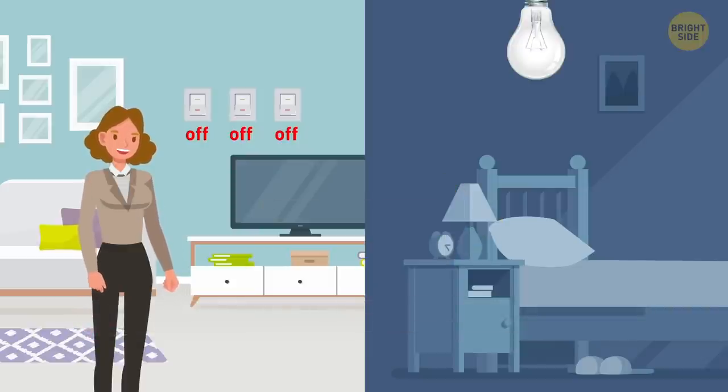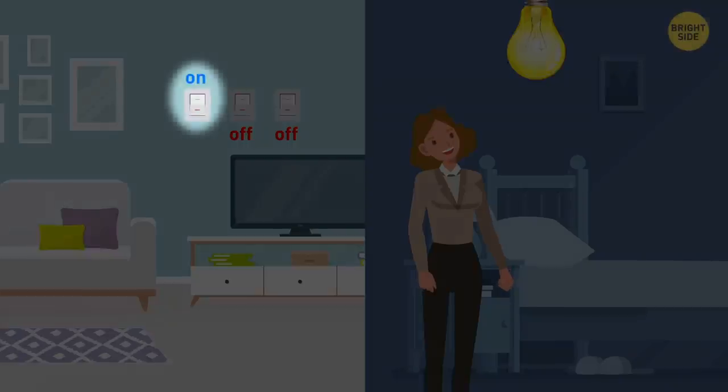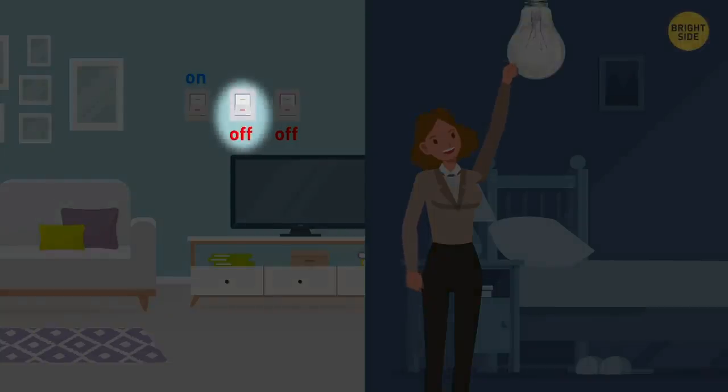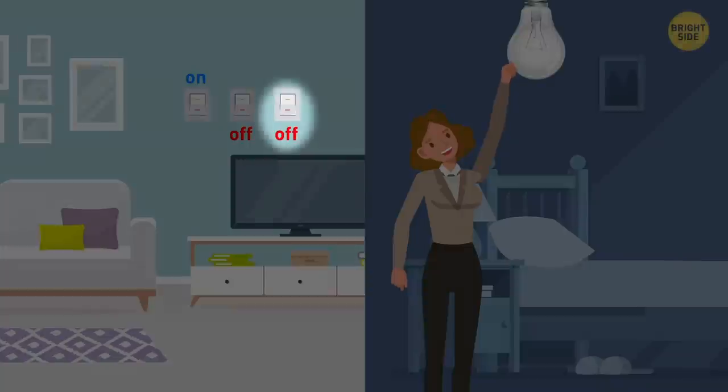Turn 2 random switches on and wait a couple of minutes. Then, turn one of them off and walk into the room. If the light is still on, then the controlling switch is the one you left in the on position. If there's no light, touch the light bulb. If it's hot, then the controlling switch is the one you just turned off. If the light bulb is cold, that switch is the one you didn't turn on.